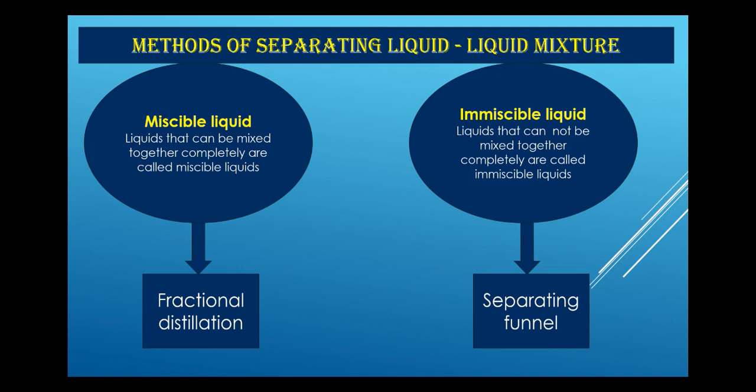Next is the method of separating liquid-liquid mixtures. There are two kinds of liquids: miscible and immiscible. Miscible liquids are those that can be mixed together completely and uniformly, like alcohol and water. Immiscible liquids cannot mix together completely, for example water and oil. For miscible liquids, fractional distillation is used; for immiscible liquids, a separating funnel is used.